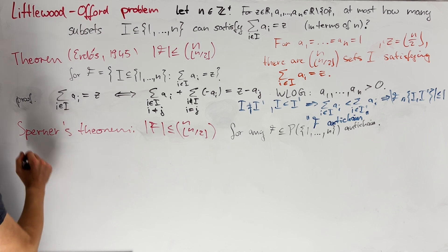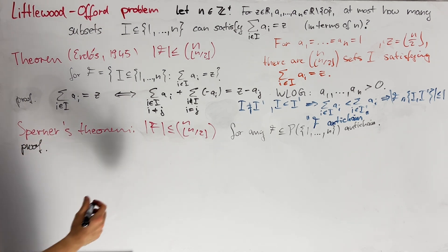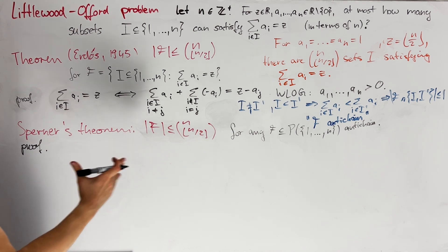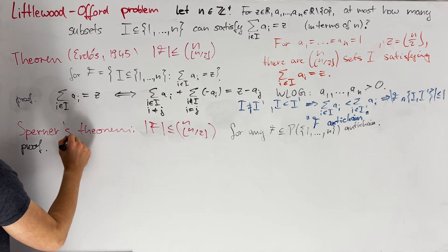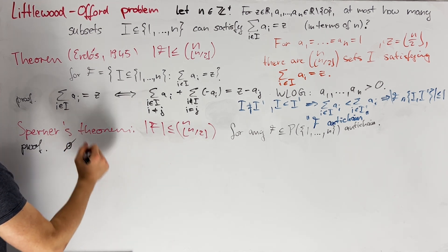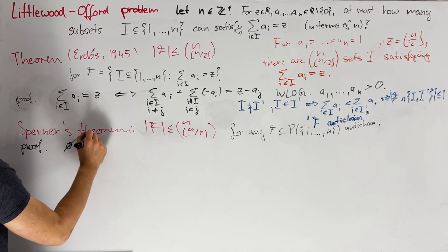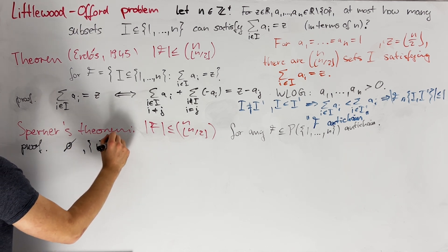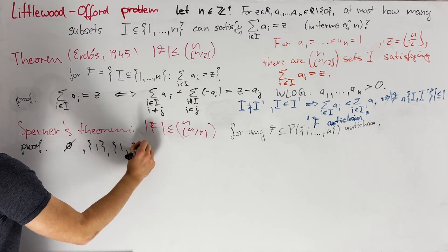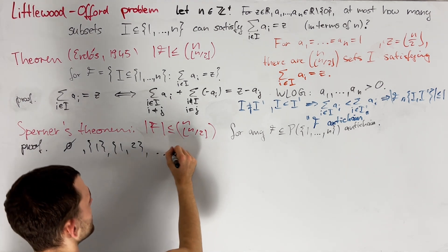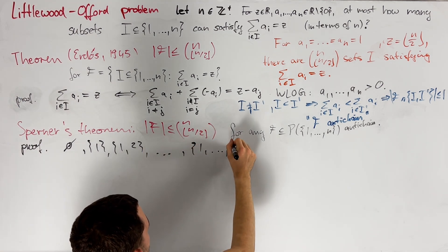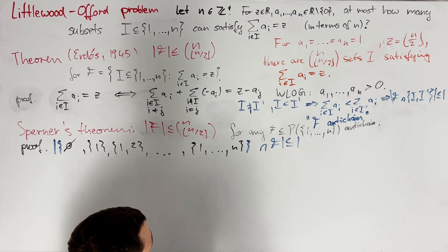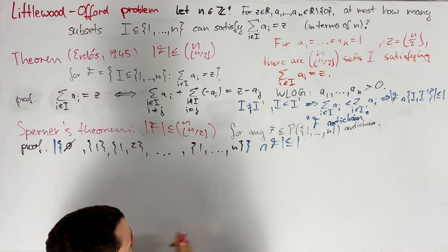The following harmless observation is already a key part in the proof of Sperner's theorem. Namely, by using our assumption that F is an anti-chain, we know that F can contain at most one of the sets: empty set, set containing 1, set containing 1 and 2, and so on, up to the entire base set 1 up to n. More generally, if we consider any increasing sequence of sets, also called a chain, then F can contain at most one of them.